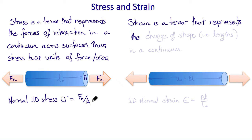Strain is a tensor that represents the change of shape, i.e. lengths in a continuum. So if our sample had an original length of L0, and as a result of the application of forces stretched to a new length L0 plus delta L, then the 1D normal strain in this tensile example, epsilon equals delta L over L0. So stress is force per unit area, strain is length change.